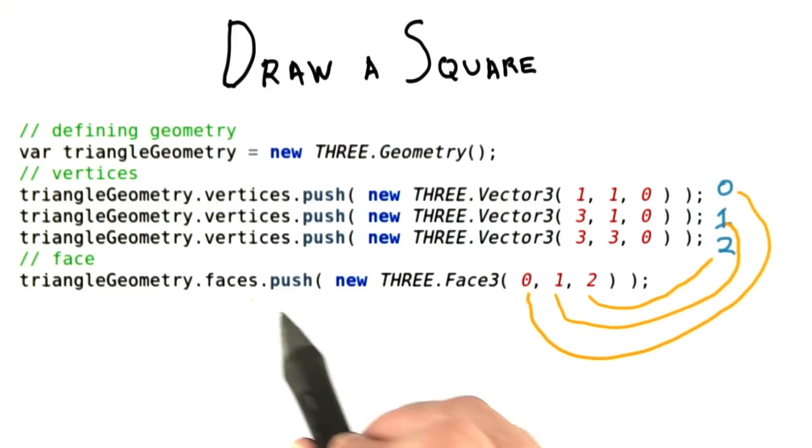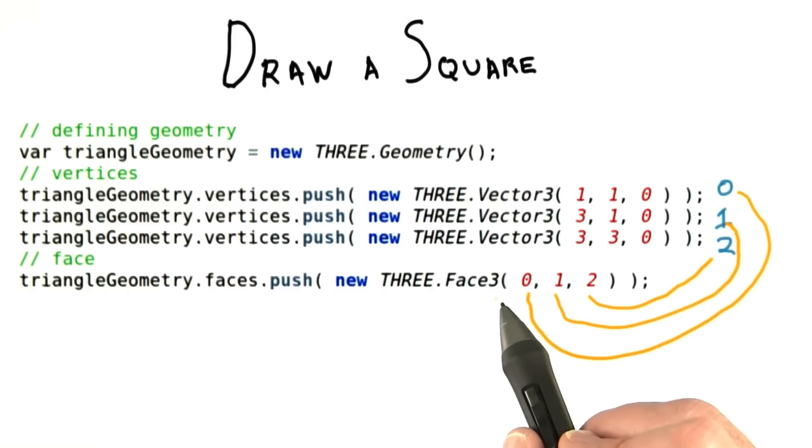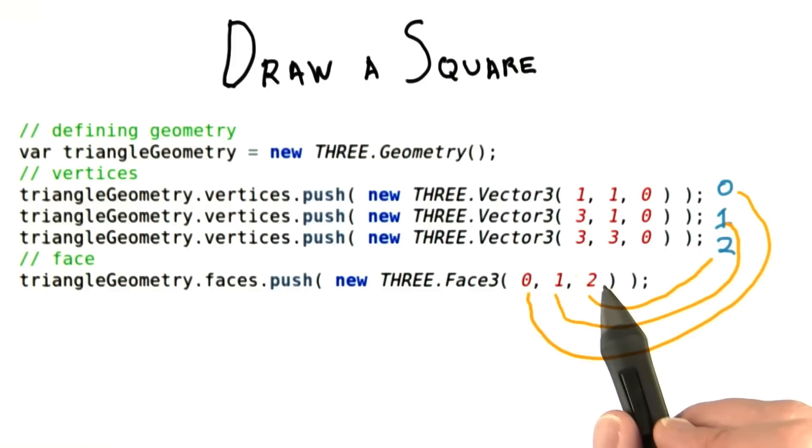A geometry object also has faces in it. By using a Face3, we define three different vertices that we're going to make a single face out of. In other words, we're going to define a triangle.